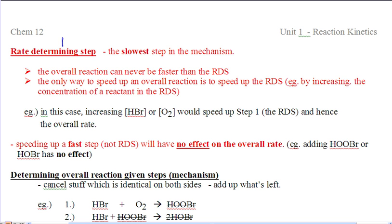First little definition. Rate Determining Step. It can be short form to RDS. It is the slowest step in the mechanism. The entire mechanism will be controlled by that Rate Determining Step. And the only way to speed up the mechanism is by speeding up the Rate Determining Step.